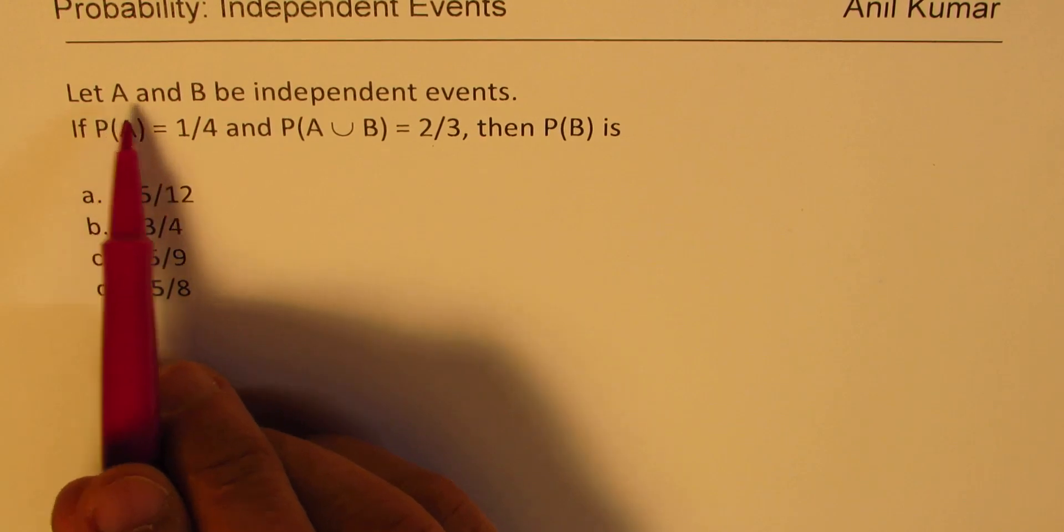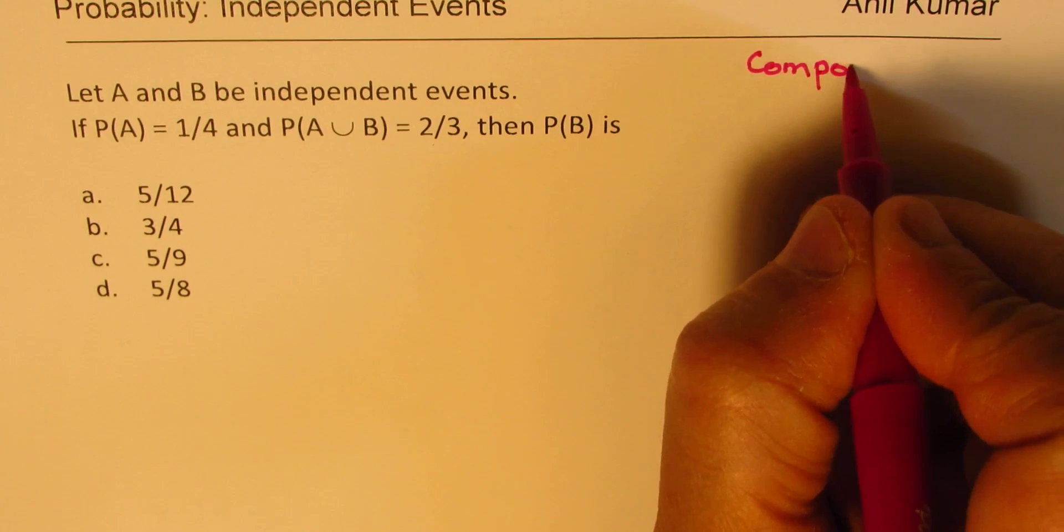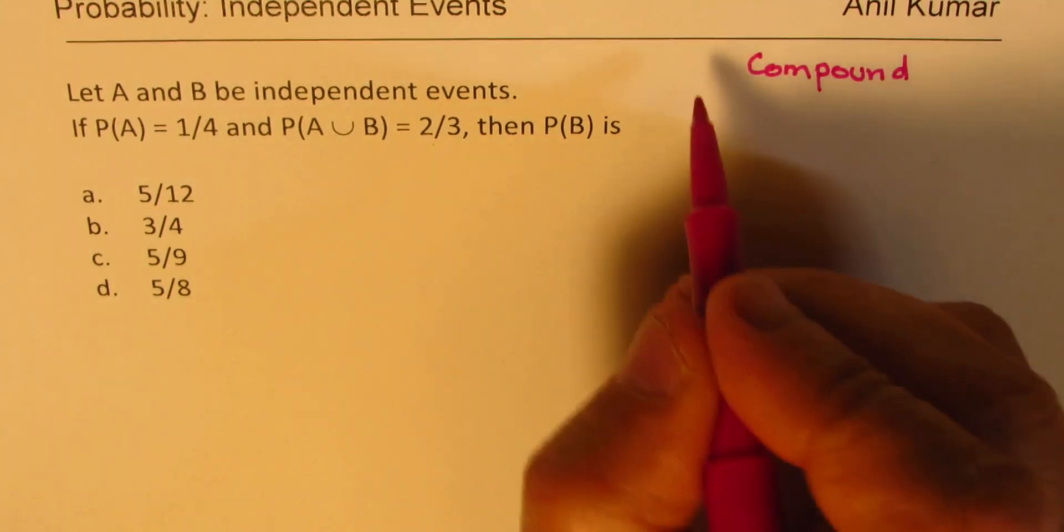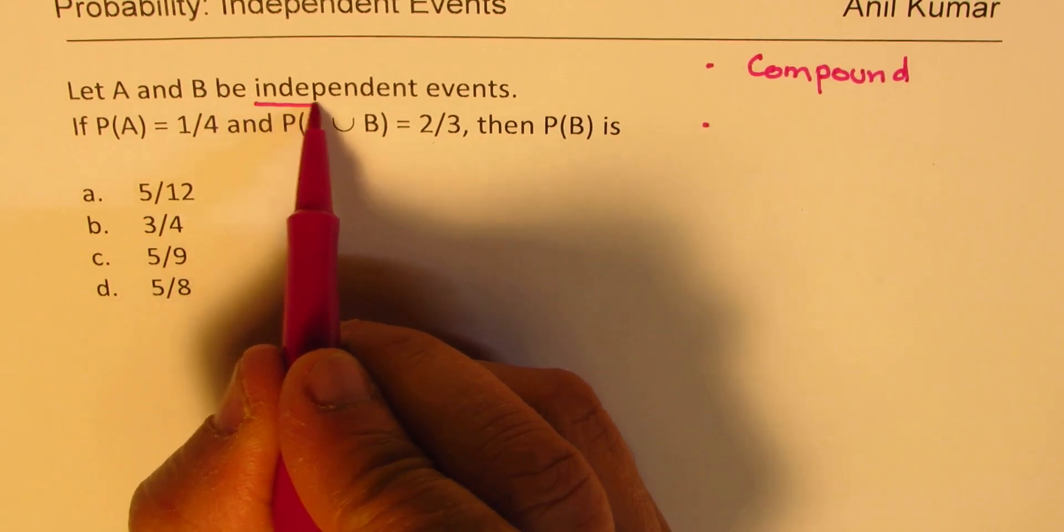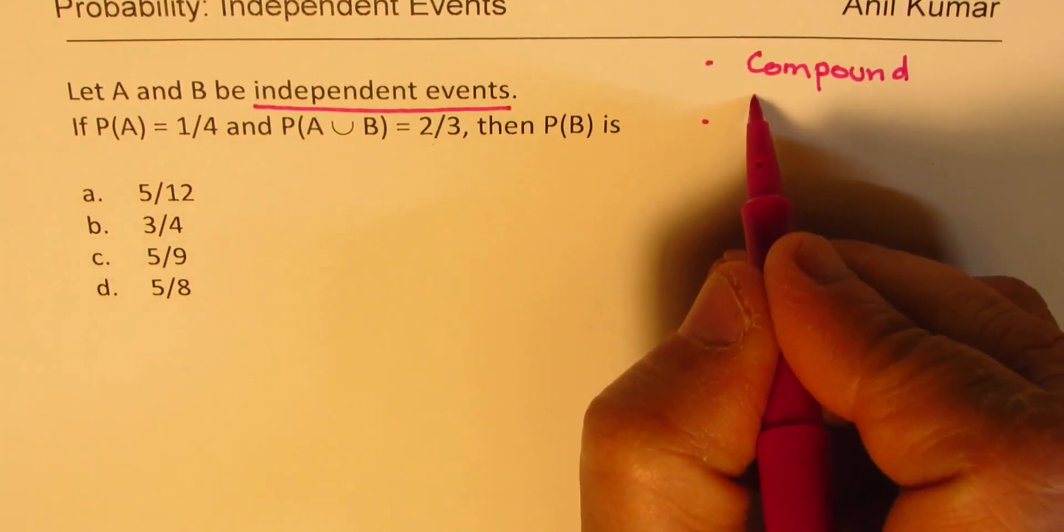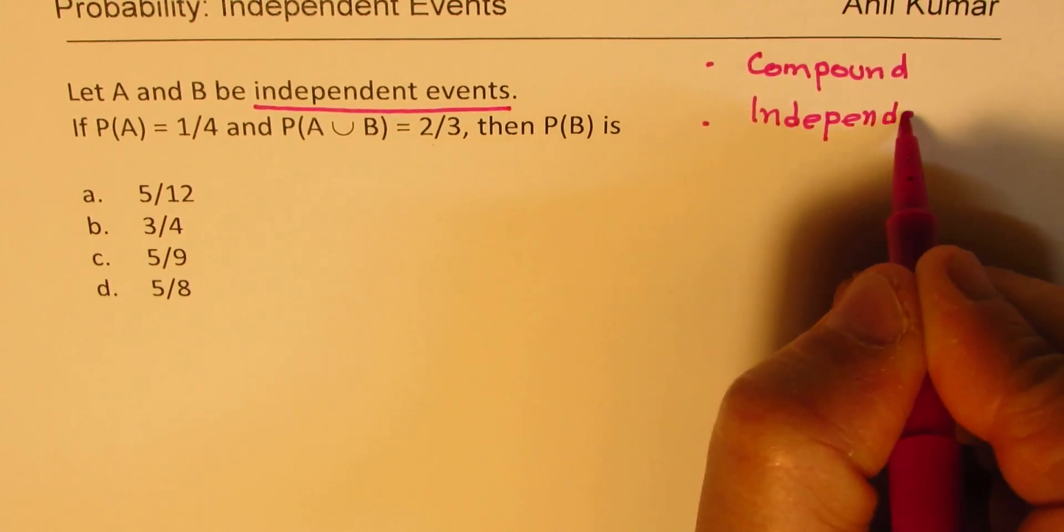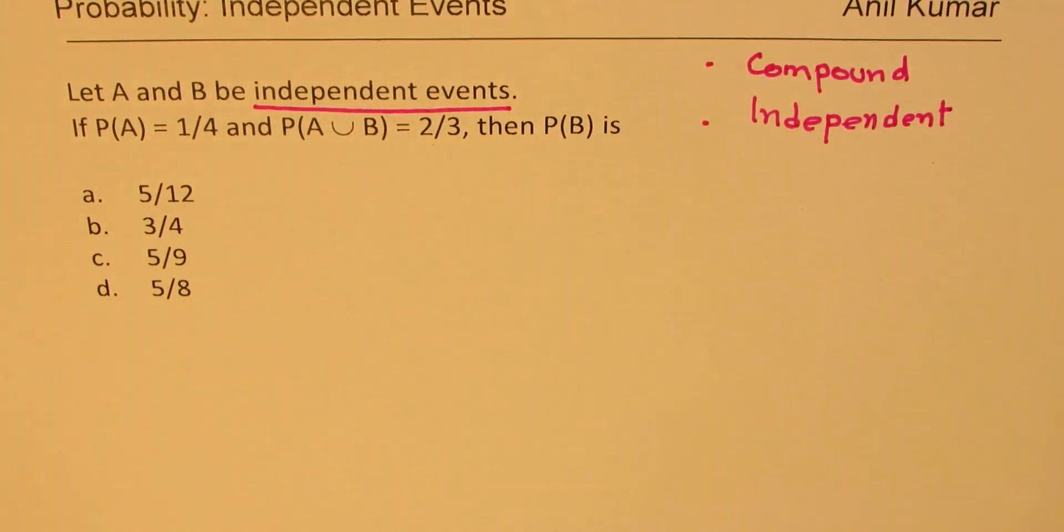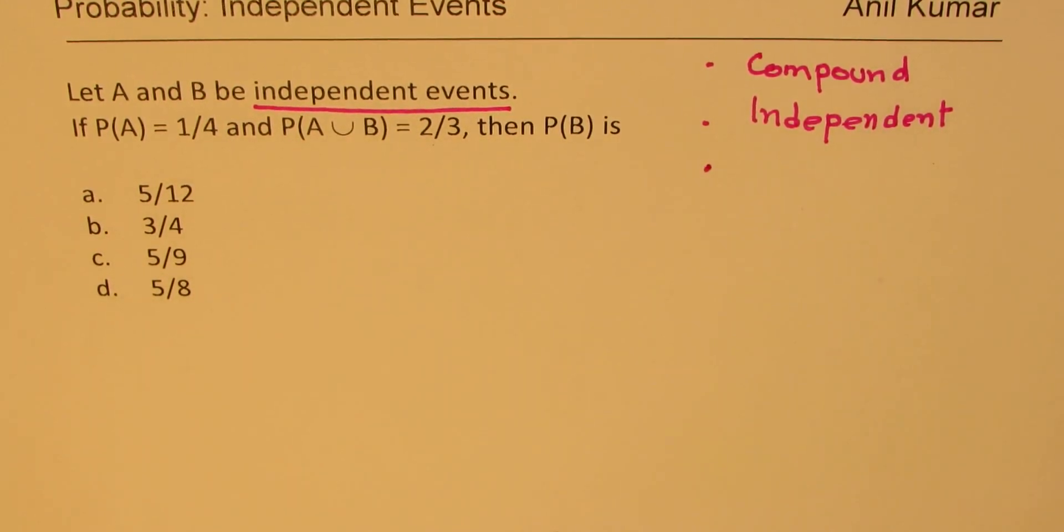When we are talking about two events, of course, it is a compound probability. Second part is mentioned here, which is independent events. Now, compound and independence. What does that remind you of? That is what you have to think of.